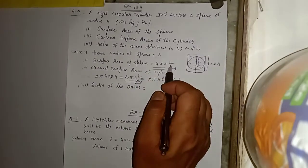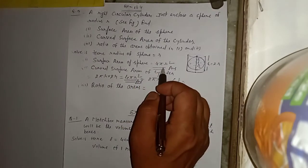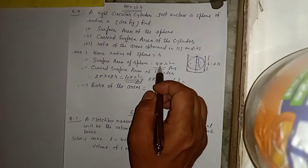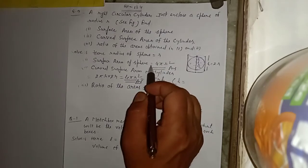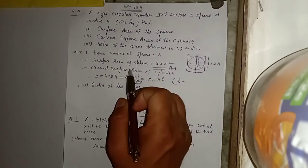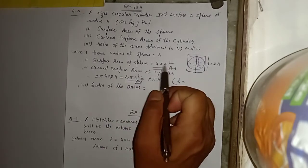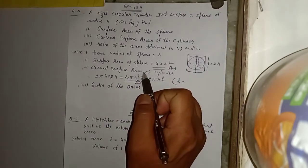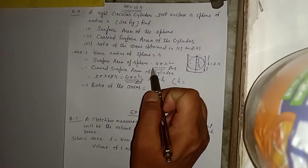4πr² — जहाँ r means radius, π means 22/7, और 4 multiple के form में है। तो surface area of sphere = 4πr² — यह आपका answer हो गया।